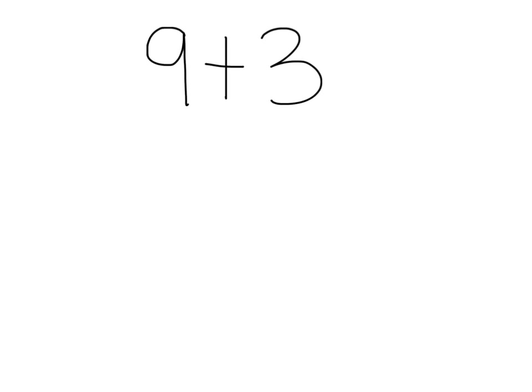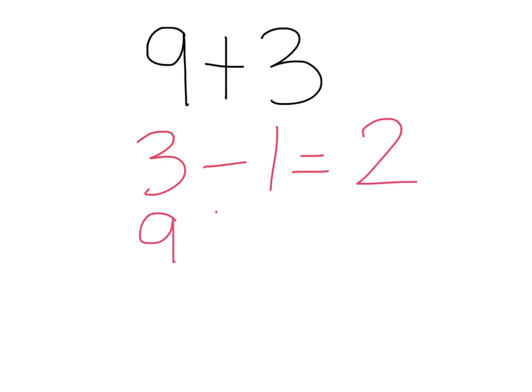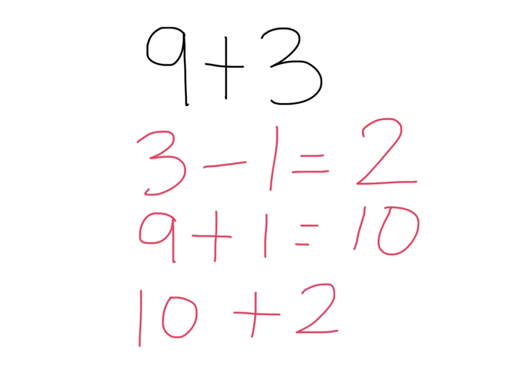Let's look at this number sentence: 9 plus 3. I know that 9 is very close to 10 and 9 only needs one more to make 10 — that's its partner number. So if I take one from the 3, I minus 1 from the 3, that gives me 2 on that side. And I take that 1 and give it to the 9. I know 9 plus 1 makes 10, so now I have 10 on one side plus the 2 on the other side equals 12. So 9 plus 3 equals 12.